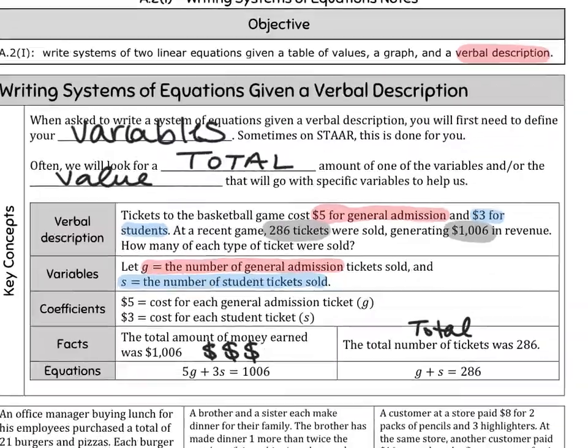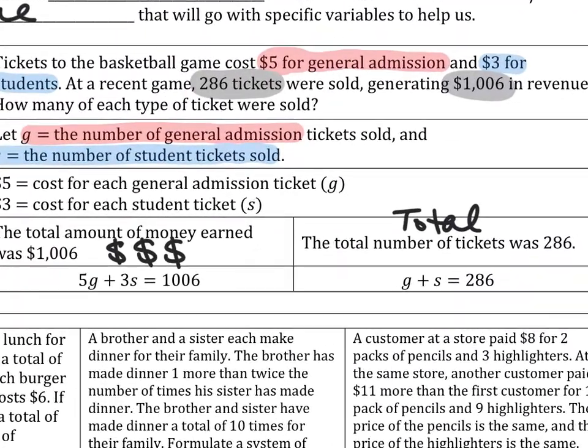Please notice some things on how the example here wrote the equations. What number did they literally put next to the letter G? Five. Why did they put the five there? Yeah, it says $5 for general admission and G is general admission, so 5G. Why did we put the three next to the S? Because that's the student tickets. It literally says $3 for students, so you put 3S. For how much money in total? Do you notice how each of these numbers, when I read the blurb, had a dollar sign next to them?